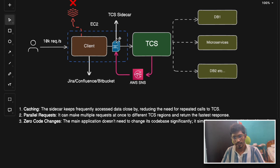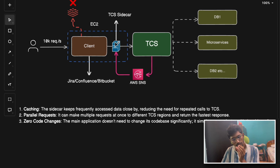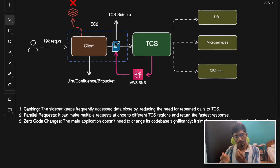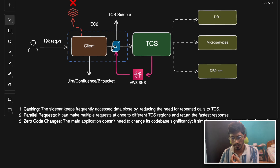The sidecar caches data for up to one hour. When updates are made to the main database, the update notification comes to the sidecar service through AWS SNS, and the sidecar can refresh its cache instantly without waiting for the next request. Normally, a cache is updated when a request finds the data outdated, but using AWS SNS the sidecar keeps its cache continuously updated with fresh data.